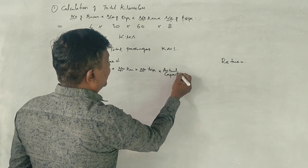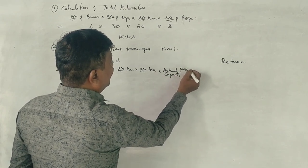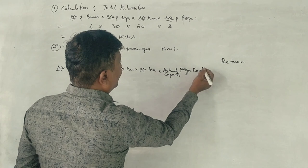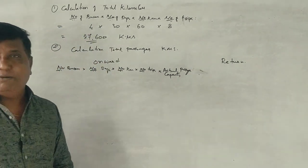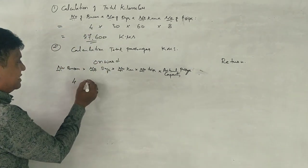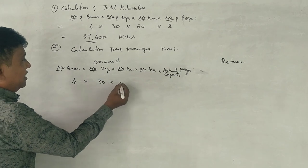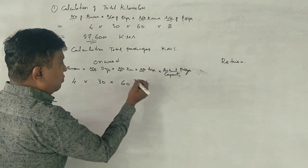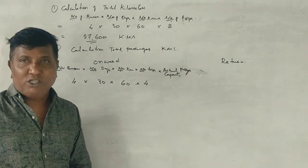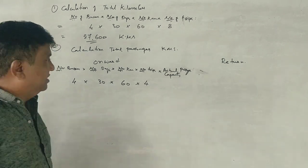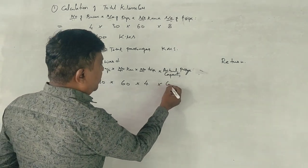Actual passenger capacity. 4 buses, 30 days, 60 km, 4 trips. Onward, return, passengers.